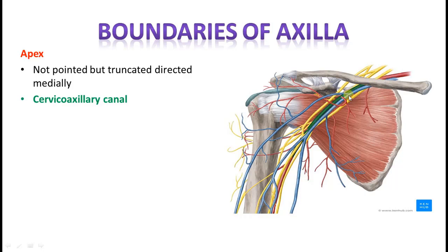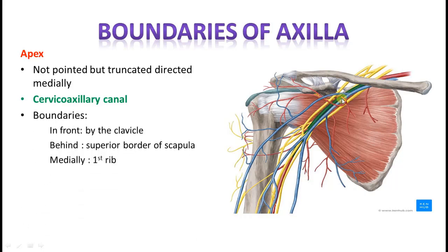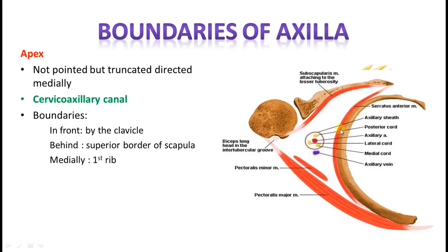If you look at the boundaries of the cervico-axillary canal: in front it is formed by the posterior border of the clavicle, behind by the scapula, and medially by the first rib. Medially by the outer border of the first rib you are able to see here. Posteriorly by the superior border of the scapula and anteriorly by the clavicle — this area is the cervico-axillary canal. The structures passing through the cervico-axillary canal are mainly the axillary artery followed by the cords of the brachial plexus, surrounded by a sheet of deep fascia called the axillary sheath.